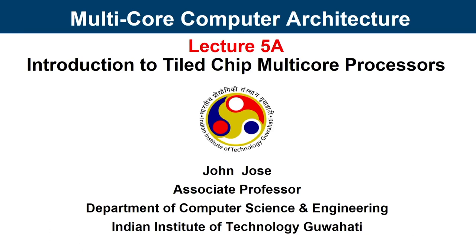Introduction to the fifth module. In this module we have close to 5 to 6 lectures, and this is specially dedicated to tiled chip multicore processors and network on chip. We have already learned about processors, their internal architecture, memory hierarchy, and additional core processor units like GPUs. Now is the time where we move on from unicore machines into multicore machines. Our modern processors all belong to the multicore processor category, where multiple processing units are housed inside a single chip — that is what is known as tiled chip multicore processors.